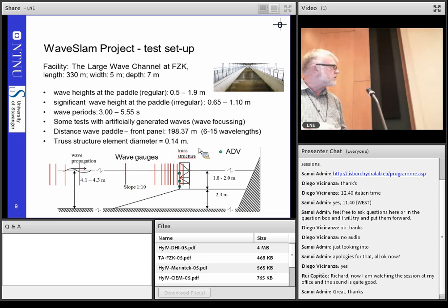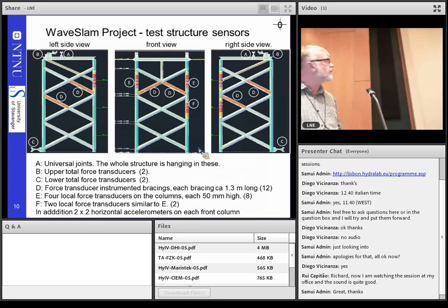I will come back to this force test users in the next slide. This one shows the wave gauges here with the red, and some acoustic doppler velocity meters with the green points here.